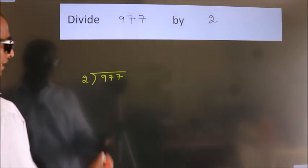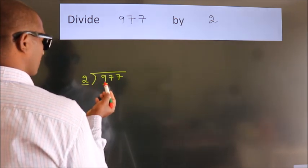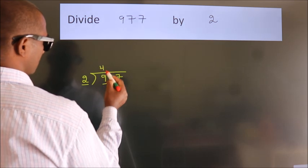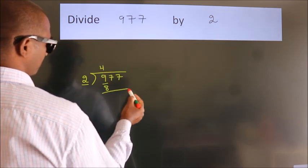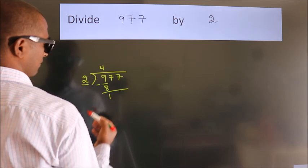Next. Here we have 9, here 2. A number close to 9 in 2 table is 2 fours, 8. Now we should subtract. We get 1.